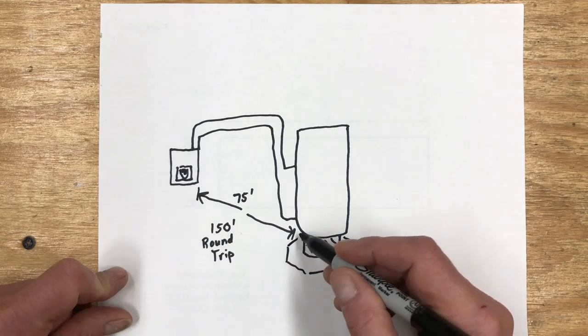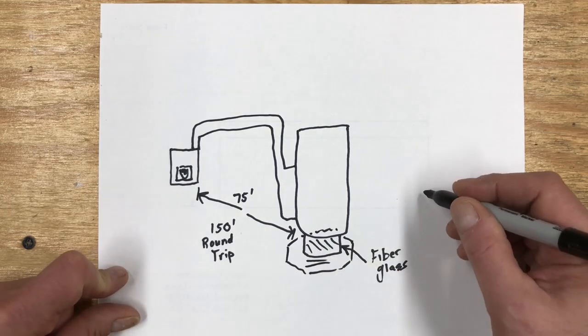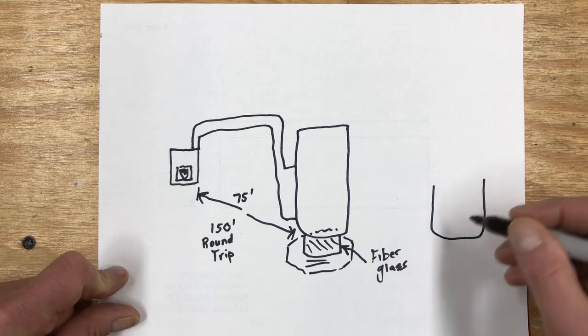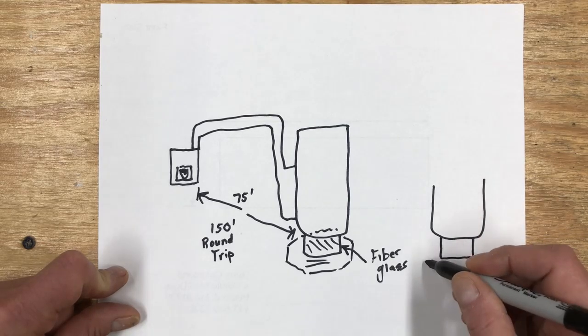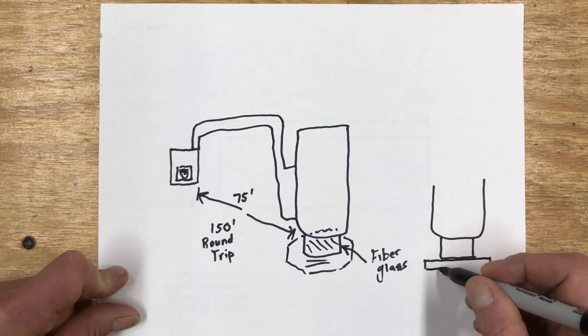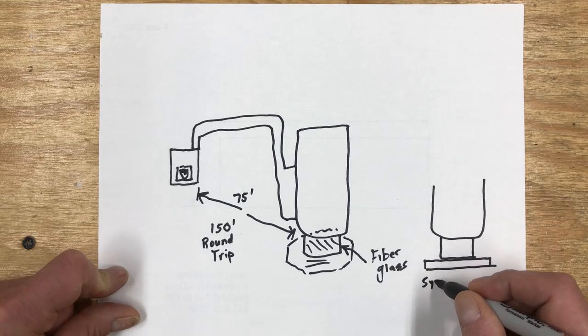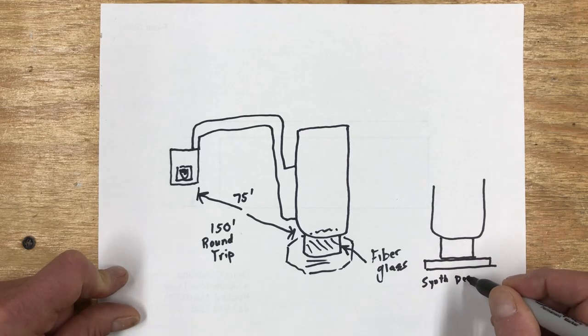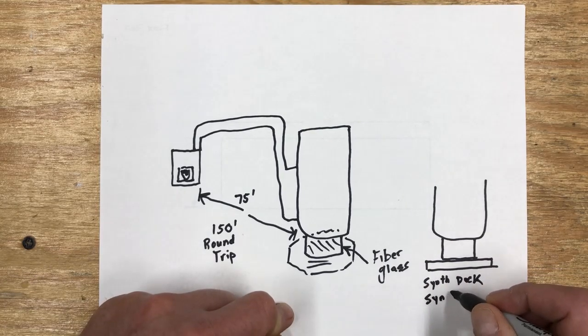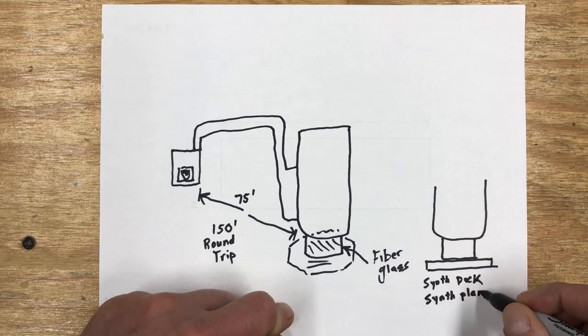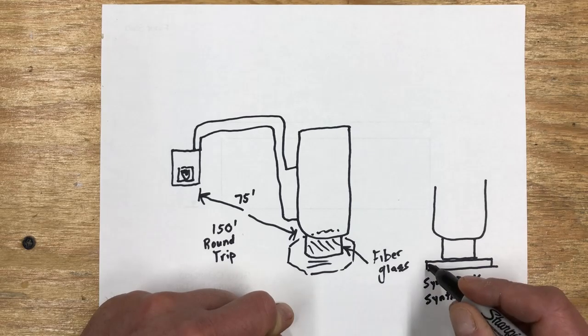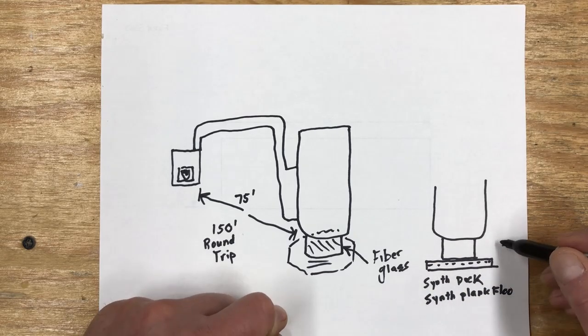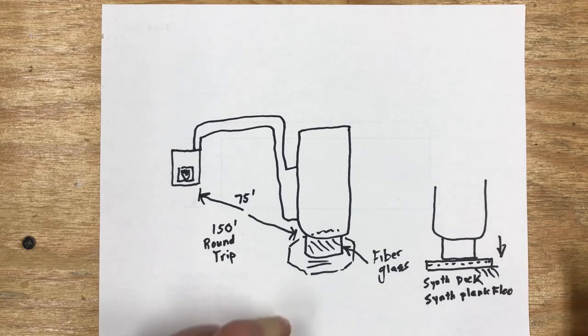So if I give you a side view here the tank is essentially built a lot like a propane tank and I built a platform down here that's made of synthetic decking and a synthetic plank floor. So there's two layers if you will and that's simply to act as a thermal break between the concrete slab and the bottom of the hot water tank because this is all stainless steel.